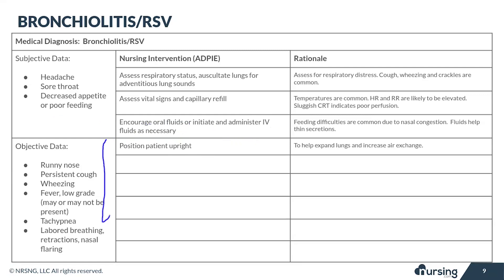The next couple of interventions are focused on improving the patient's breathing. Probably the most basic thing we can help any patient with when they're having difficulty breathing is their position. We want to position the patient in an upright position, and the easiest way to do that is to elevate the head of bed. Most cribs will have a way for you to do that as well. This is going to help their lungs expand and increase their air exchange.